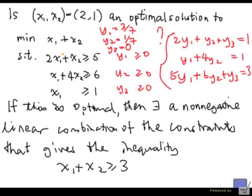So 3 over 7 times the first inequality times 1 over 7 times the second inequality will give us x1 plus x2 on the left-hand side. So we can check that. So 2 times 3 is 6. 6 over 7 plus 1 over 7 is 1.